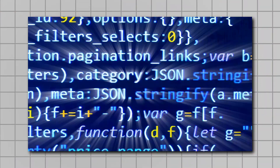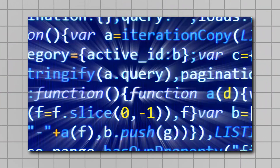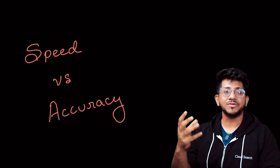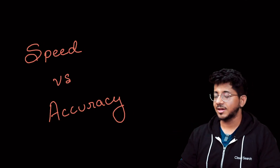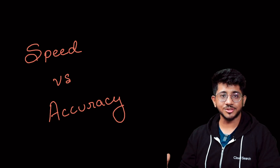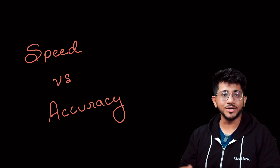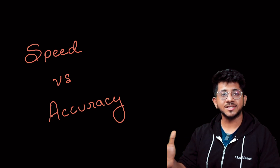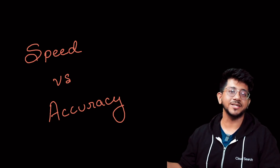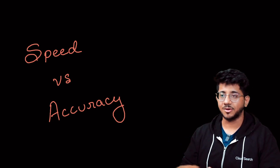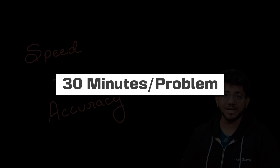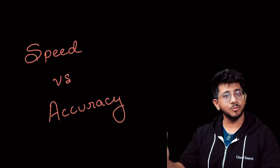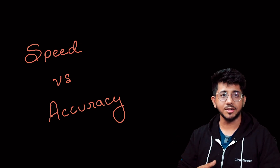Speed is also super important in coding tests and interviews. In coding tests you get on average 30 minutes per problem, and in that stress scenario it's super difficult to code in time. Similarly in interviews you have to navigate the total time with the expectation that the interviewer has — again around 30 minutes per problem. So speed becomes very crucial to manage time in both scenarios.